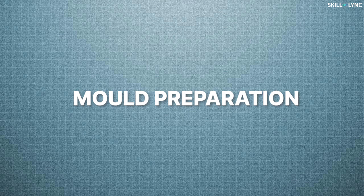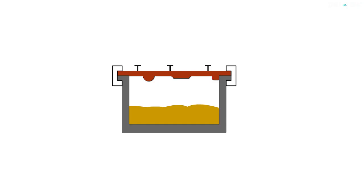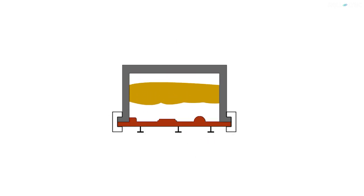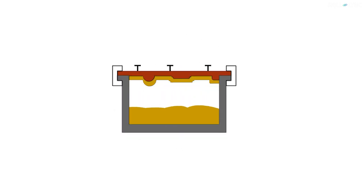After the pattern is made, the mold is prepared. This is done by heating each half of the pattern to 175 to 370 degrees Celsius. This heated pattern is clamped to a dump box, which contains a mixture of sand and resin binder. The dump box is inverted and the sand-resin mixture is allowed to coat the pattern. Thanks to the high temperature of the pattern, the sand-resin mixture hardens and forms the shell-structured mold around the pattern.